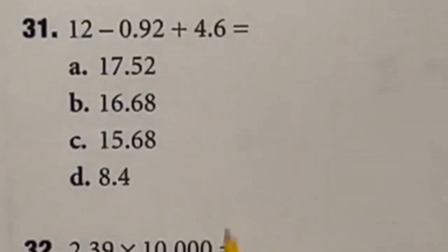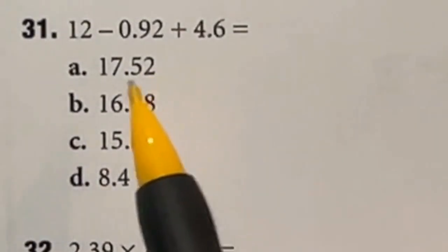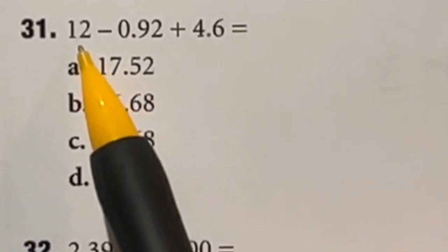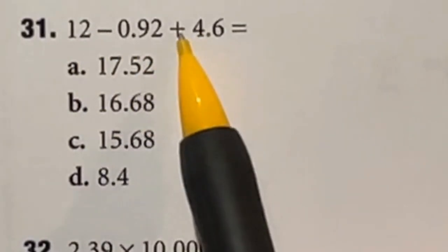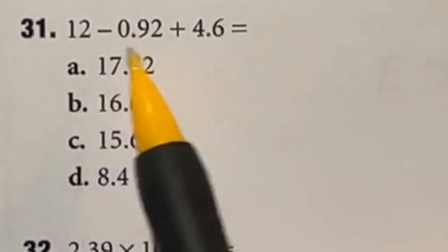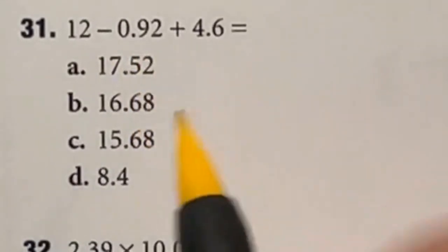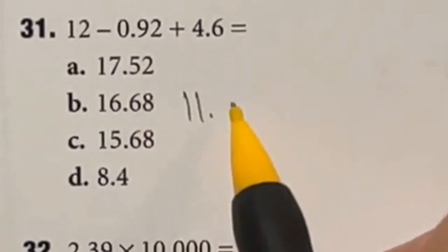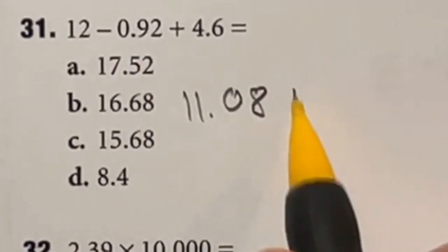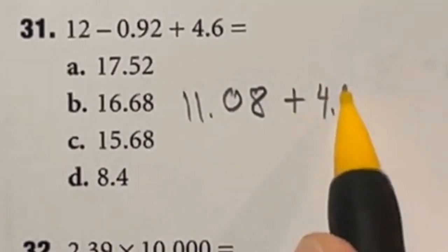The ASVAB just doesn't trust our skills with decimals, because this seems like another pretty easy question. I'm just going to go from left to right, since subtraction and addition are in the same order for PEMDAS. So 12 minus the 0.92 is going to give me 11.08. And then from there, I still have to add that 4.6.